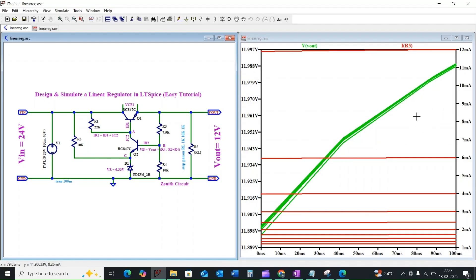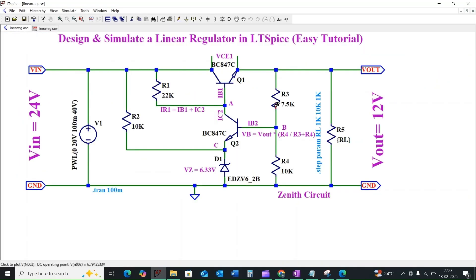By considering this analysis, this circuit provides stable 12 volt output despite variation in the input voltage and the load current. Remember that the component values, especially R3 and R4, are critical for the desired output voltage and regulation performance, so while choosing R3 and R4 we need to be very careful.